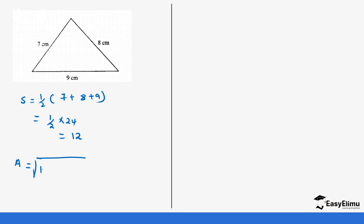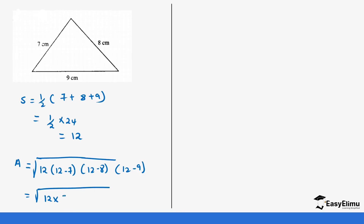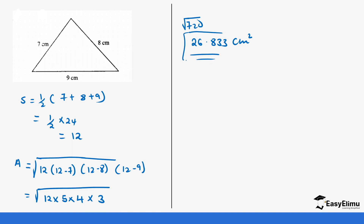Our area is √(12 × (12−7) × (12−8) × (12−9)), which is √(12 × 5 × 4 × 3). Multiplying the inner values: 12 × 5 × 4 × 3 = 720. The square root of 720 gives us 26.833 cm². That's how we get the area.